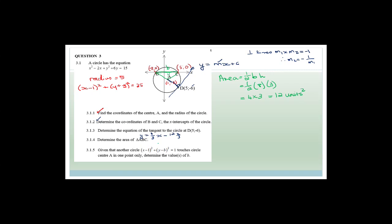It says: given another circle centered at (1, B) with a radius of only 1, which just touches the circle with center A at one point only — determine the value or values of B. So there is some other circle centered along x equals 1, somewhere on that vertical line, with radius 1. It can either touch the original circle from outside above or below, or from inside.